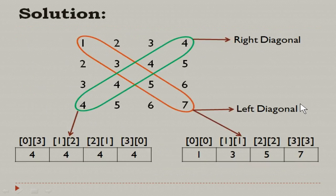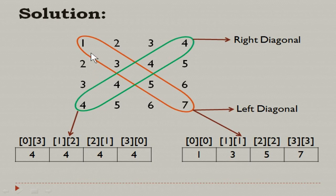The left diagonal is marked in orange color oval symbol and the right diagonal is marked in green color oval symbol. The elements 1, 3, 5, 7 are in the left diagonal, and there are 4 elements in the right diagonal.